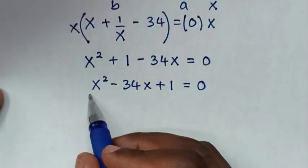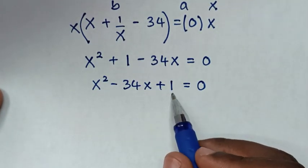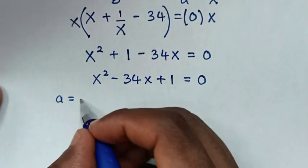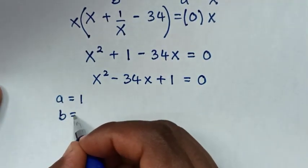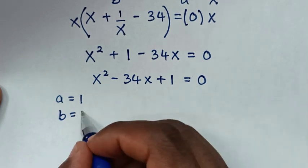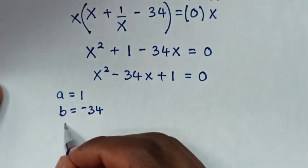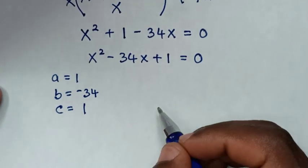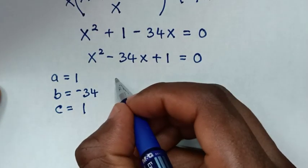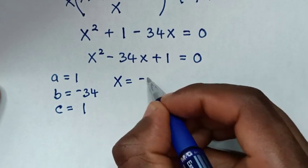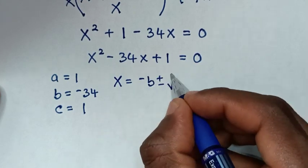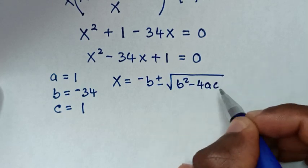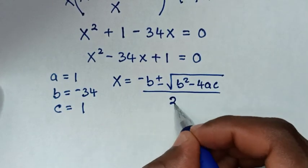Then we solve this quadratic equation by the quadratic formula, where a is equal to the coefficient of x squared, which is 1, and b is equal to the coefficient of x, which is negative 34, and c is equal to the constant, which is 1. From the quadratic formula, x is equal to negative b plus or minus square root of b squared minus 4ac, over 2a.